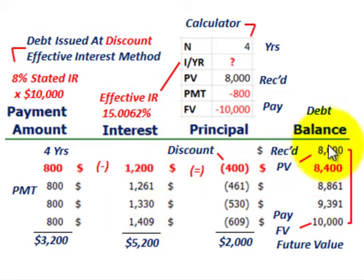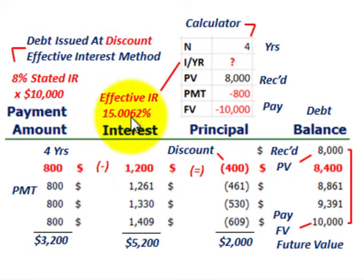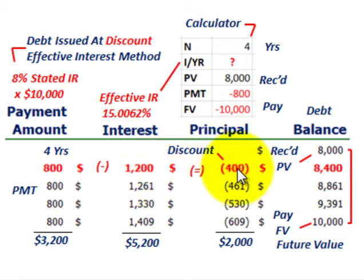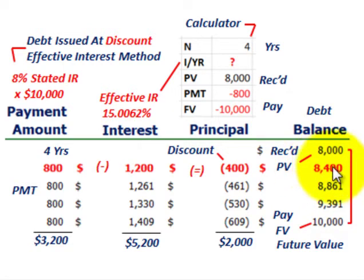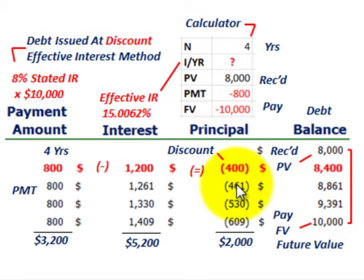To amortize: start with the $8,000 beginning balance times the effective rate of 15.0062%, giving effective interest expense of $1,200 for the first year. Compare that to the $800 cash payment — the difference is $400 of discount amortization to add to the beginning balance, giving a new carrying value of $8,400. Then take $8,400 times the effective interest rate to get $1,261 for year two's interest expense. Subtract the $800 cash payment, and $461 is the discount amortized. Continue that process for each year.